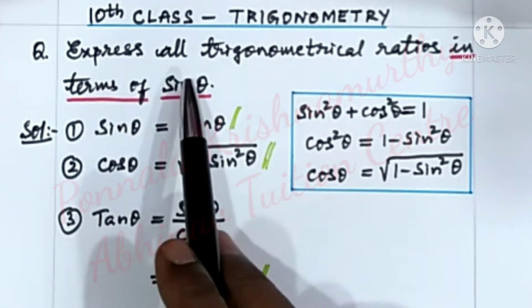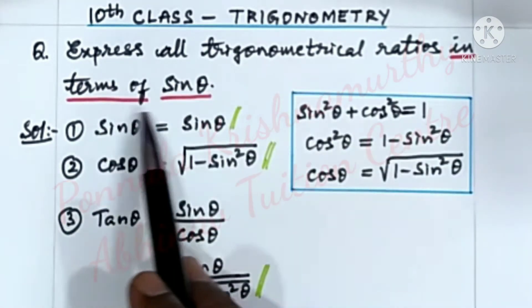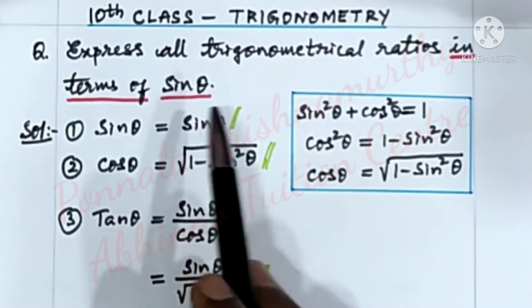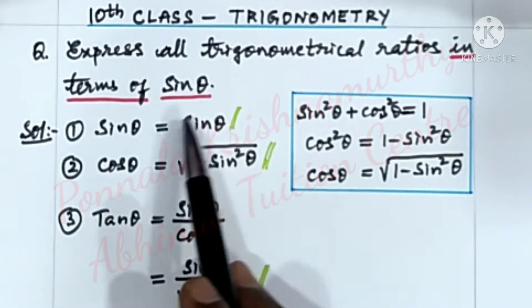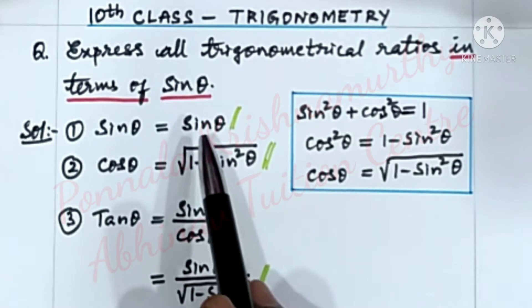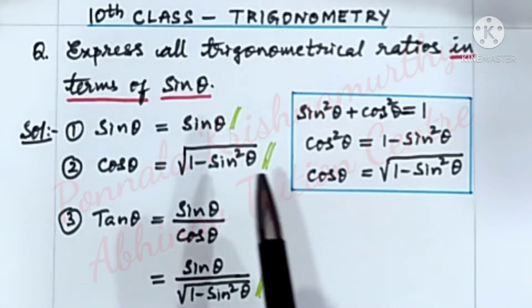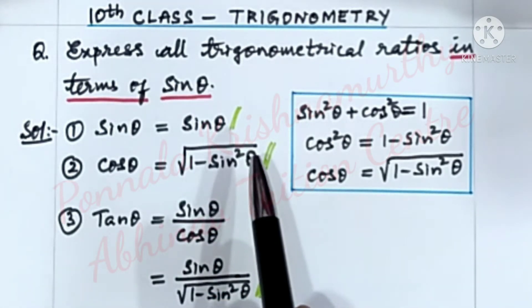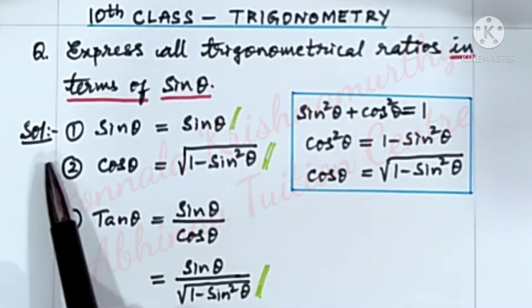Express all trigonometrical ratios in terms of sin theta. That means all the six trigonometrical ratios should be in terms of sin theta, meaning in the right hand side we have to get only sin theta.